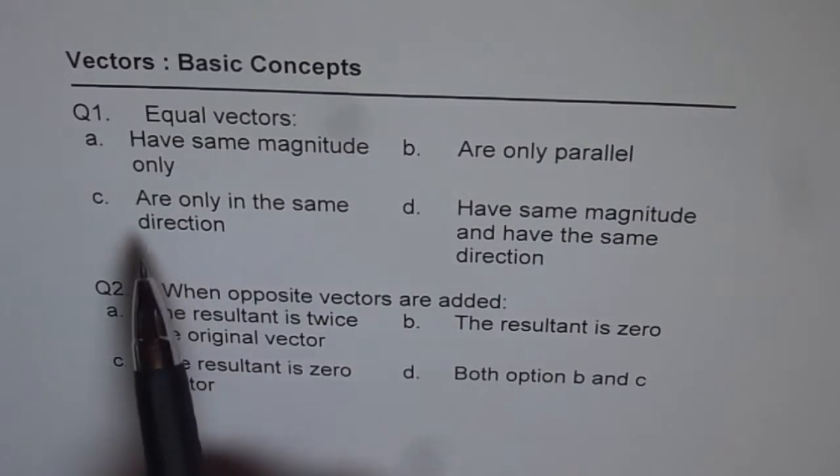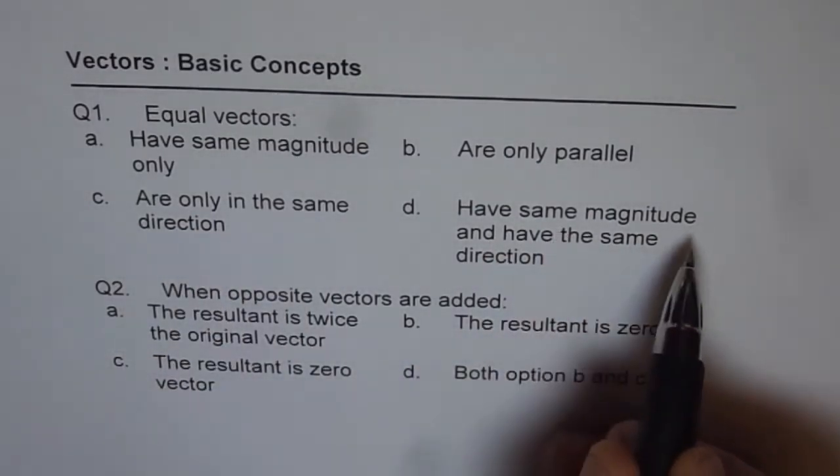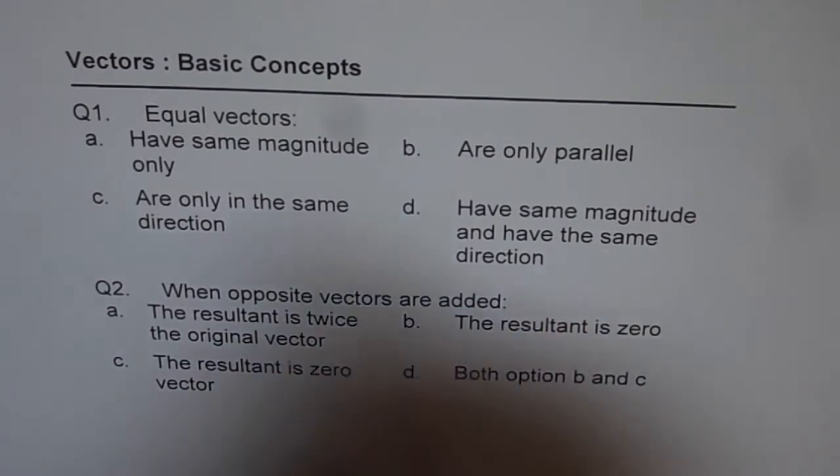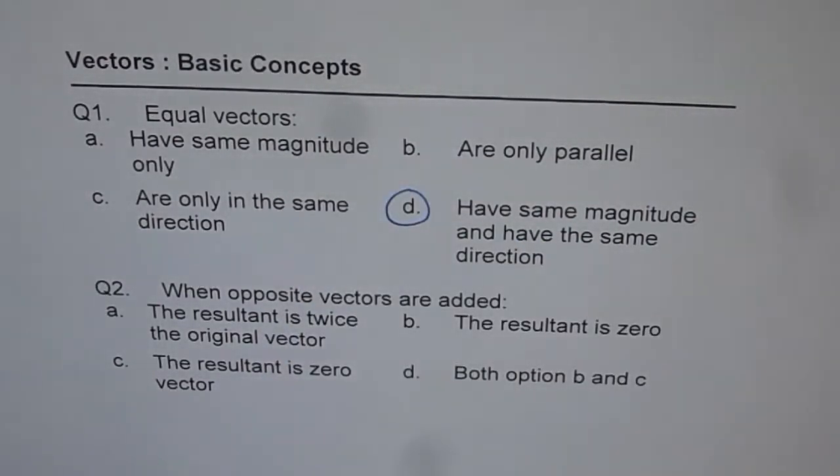Are only parallel? Are only in the same direction? These have same magnitude and have the same direction. So of course, answer D is perfectly right for equal vectors. They should have same magnitude and should have same direction.